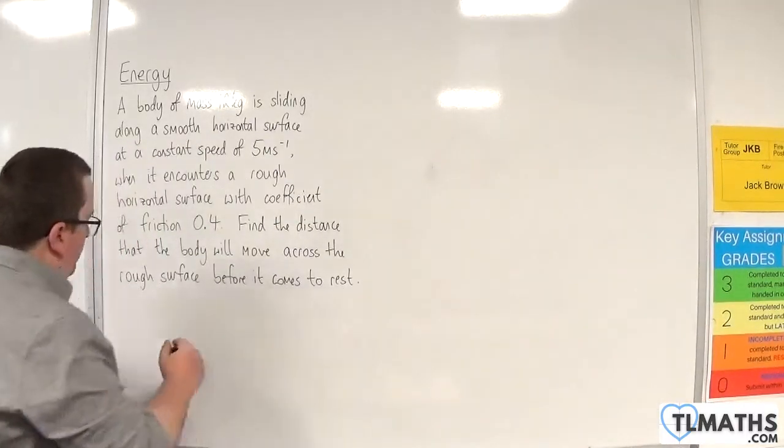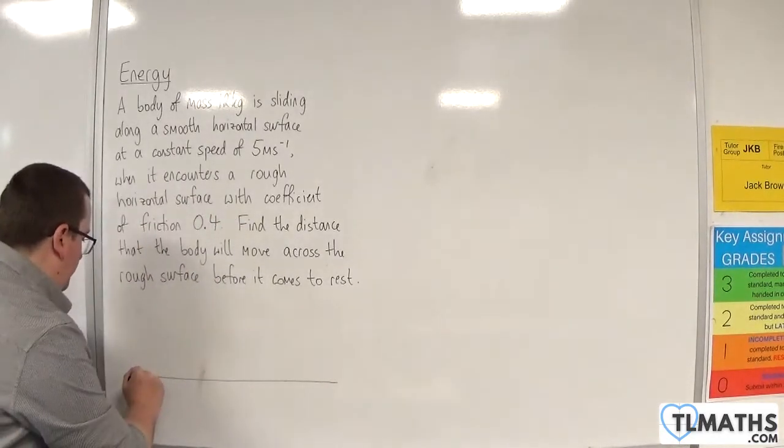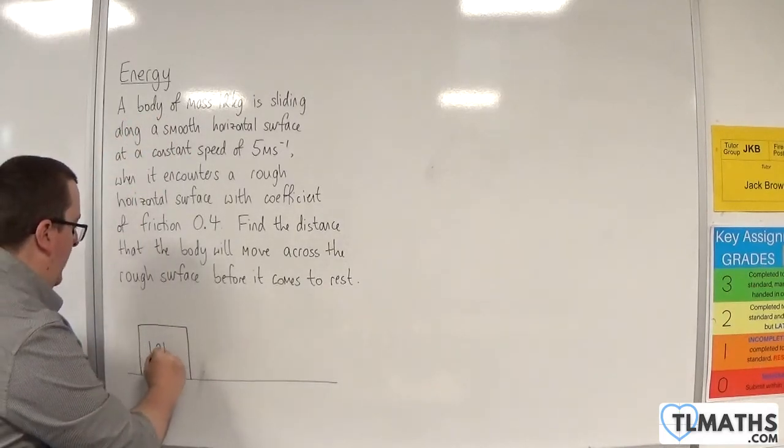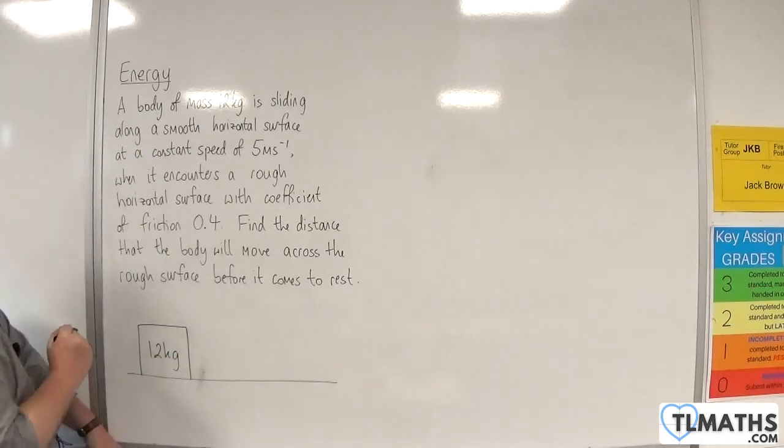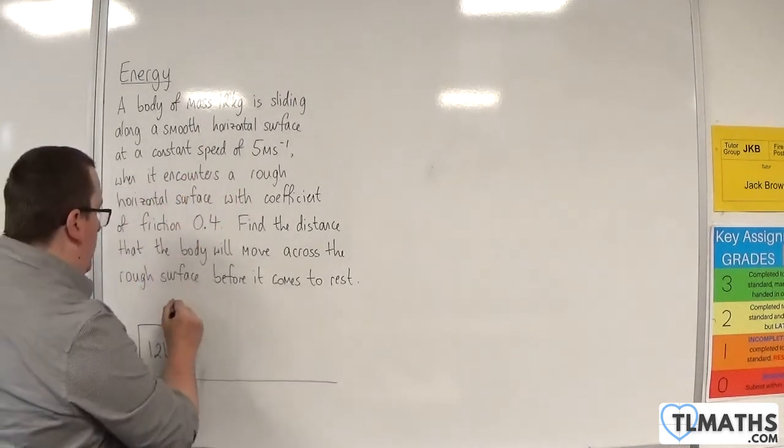Let's draw a diagram so we can visualize what's going on. We have our block, or body of mass 12 kilos, and it's sliding along a smooth horizontal surface at a constant speed of 5 metres per second.